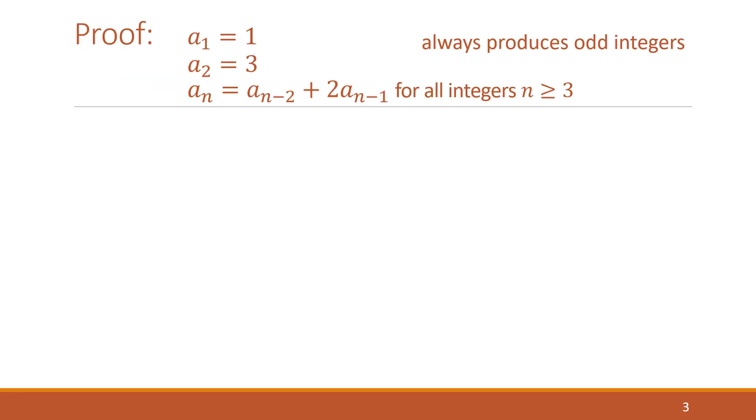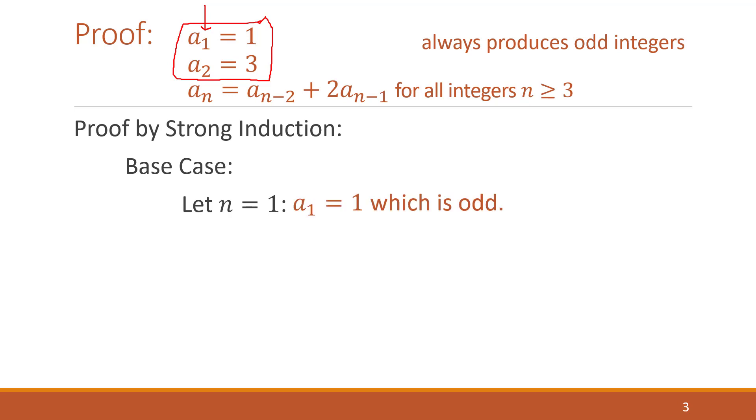So to do a proof by strong induction, the first question is, how many base cases are we going to need? Because we have these two base cases in our recurrence relation, we're going to need two base cases in our proof by induction. So we're going to have the first one: we pick the subscript of our first recurrence relation base case. So if n equals one, we're going to then look at a sub one, which is one.